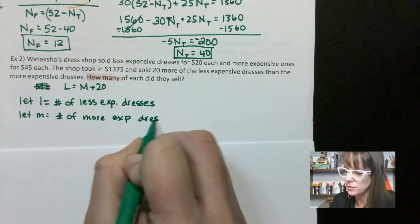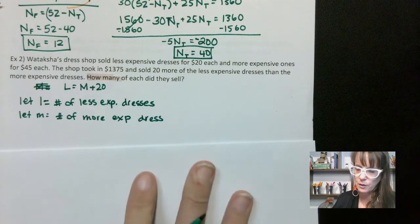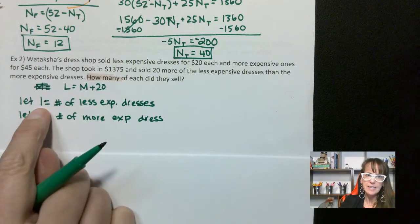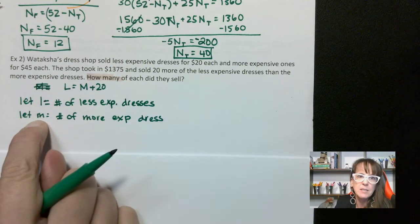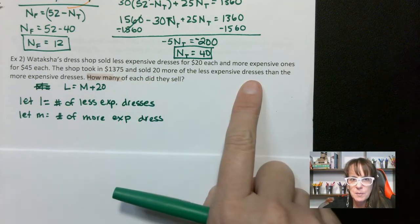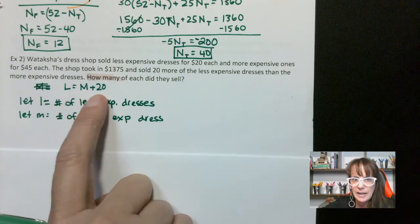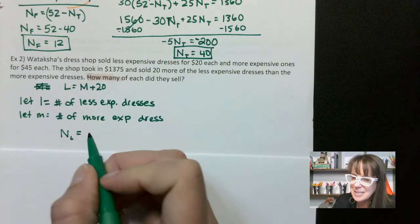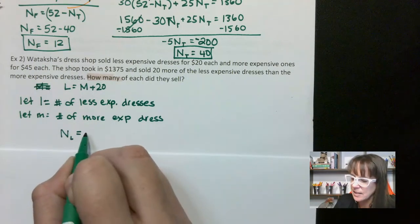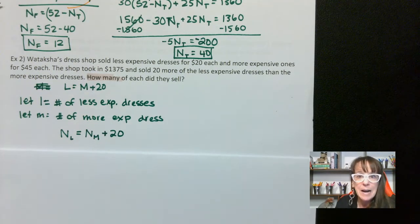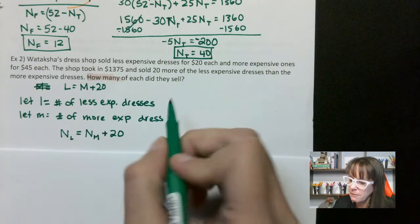We're going to use subscripted variables here. We know they sold 20 more of the less expensive dresses, so: the number of less expensive dresses equals the number of more expensive dresses plus 20. That's our quantity equation. Now we have to do our value equation.